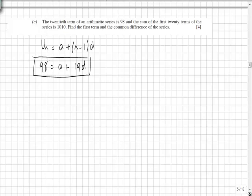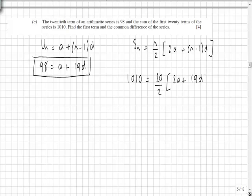The second piece of information tells us that the sum of the first 20 terms is 1010. So again, we need to use our sum formula for n terms, which is n over 2 times 2a plus n minus 1d. Substituting the information we have, 1010 is equal to 20 terms over 2, times 2a plus 19d, since 20 minus 1 is 19.